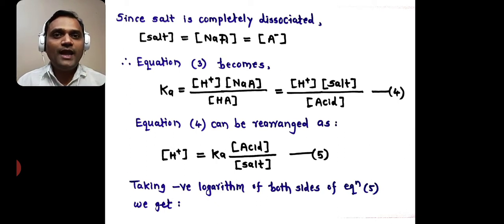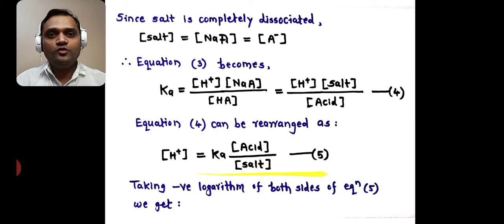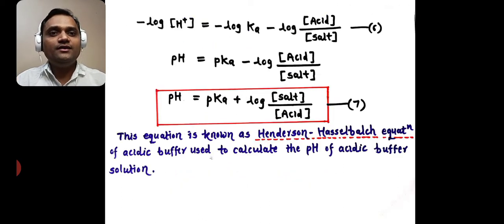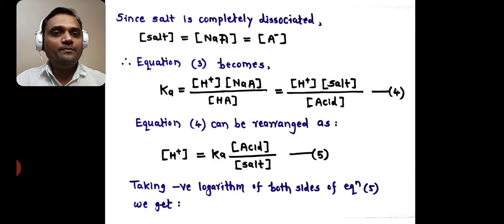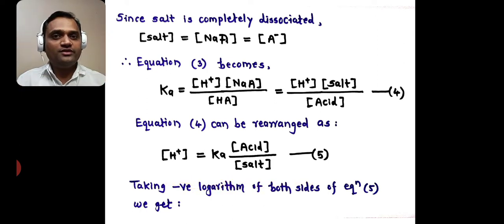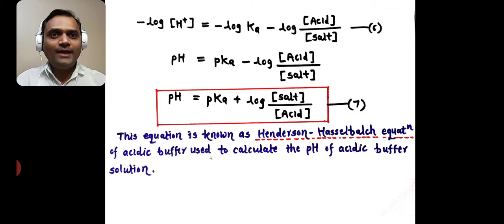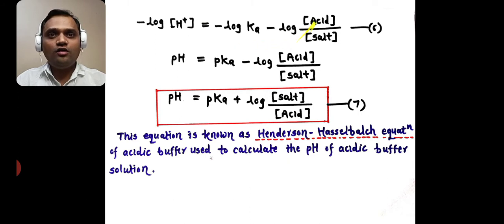Now we have to take the negative logarithm of both sides of equation 5. So we get: −log[H⁺] = −log Ka − log([acid] / [salt]). This is equation 6.